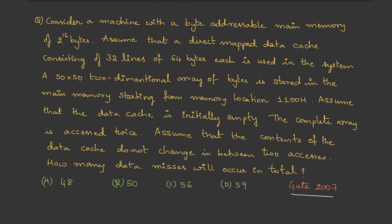Here is a question asked in GATE 2007. Consider a machine with a byte-addressable main memory of 2^16 bytes. A direct-mapped cache consisting of 32 lines of 64 bytes each is used. A 50×50 two-dimensional array of bytes is stored in main memory starting from memory location 1100H. The data cache is initially empty. The complete array is accessed twice, and the cache contents do not change between the two accesses. How many data misses will occur in total? The question looks big but when you solve it, it is actually simple.